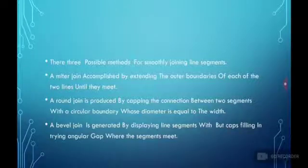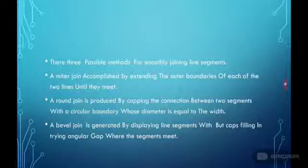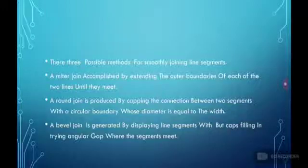There are three possible methods for smoothly joining line segments. A miter join is accomplished by extending the outer boundaries of each of the two lines until they meet. A round join is produced by capping the connection between two segments with a circular boundary whose diameter is equal to the width. A bevel join is generated by displaying line segments with butt caps, filling in the triangular gap where the segments meet.